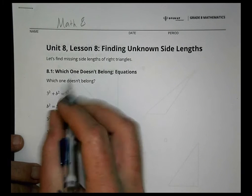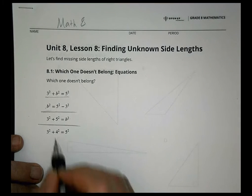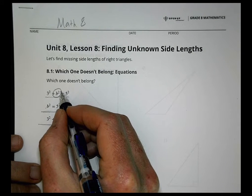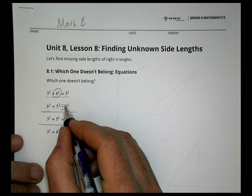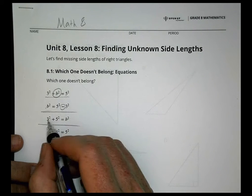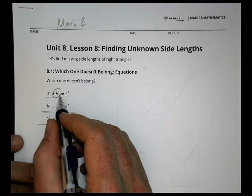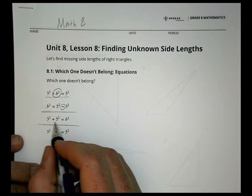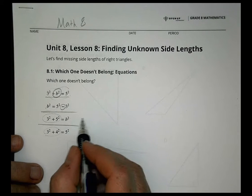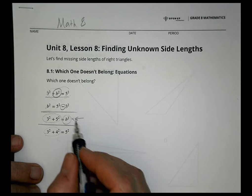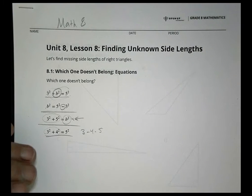Looking at the first equation, I notice that compared to the others, the rest have b squared isolated or no b squared at all — this is the only one with b squared in the middle of the equation. Another difference: this is the only one with a subtraction sign. This one adds up to five, like five minus three, while another has five plus three. You can see three plus four going to five, and one uses three plus five, making the b values different.